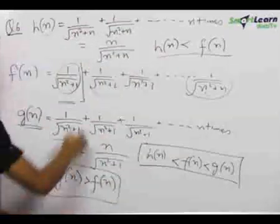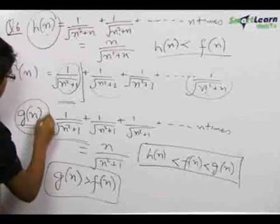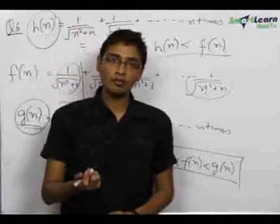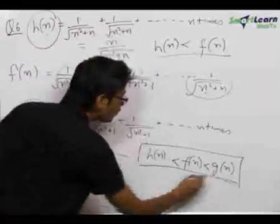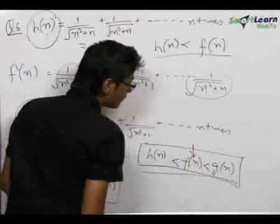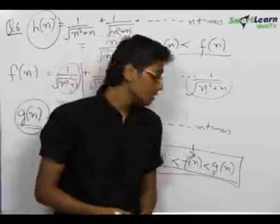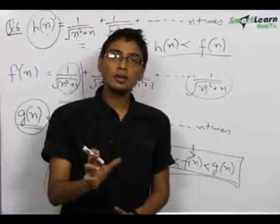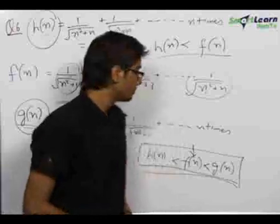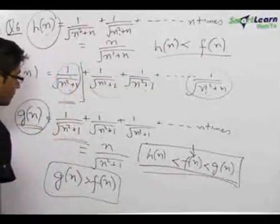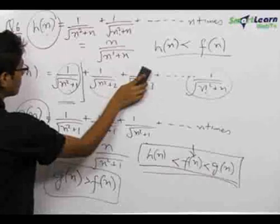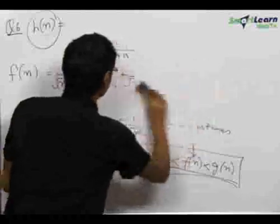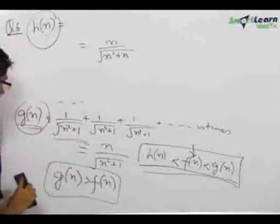If the two limits are equal, then the limit of f(x), sandwiched between g(x) and h(x), will also equal that common limit. We need to check whether h(n) and g(n) have the same limit as n tends to infinity, since we want to find the limit of f(n) at n tending to infinity.